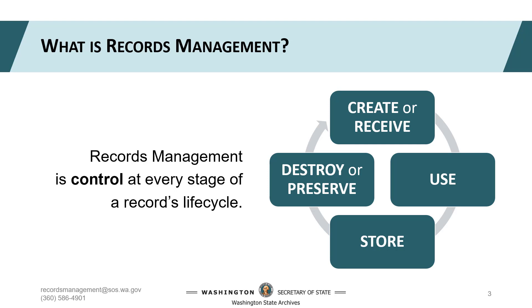A record is active when it's supporting your current work in the use stage. You might share active records over email or edit them as a team in a shared folder. For those records to be useful to your agency, they need to be organized for accessibility. A records inventory is an excellent tool to identify what already exists, where it's stored, and how long it needs to be kept. While in the use stage, you'll want to explore adopting tools to simplify the organization of and access to your records.